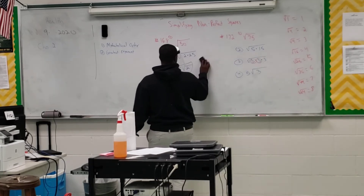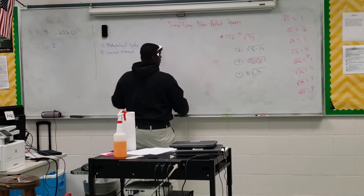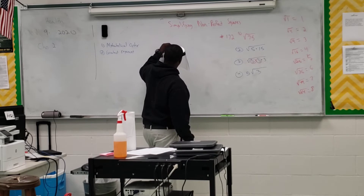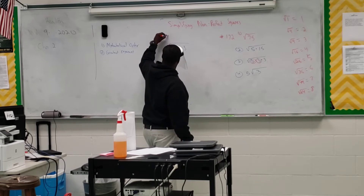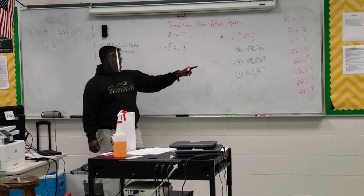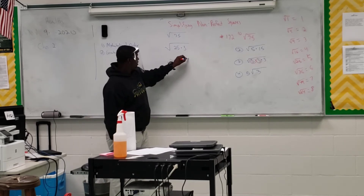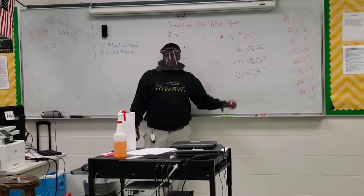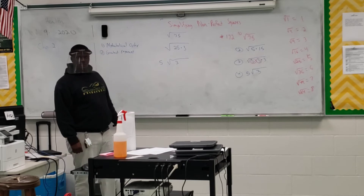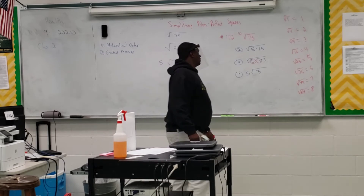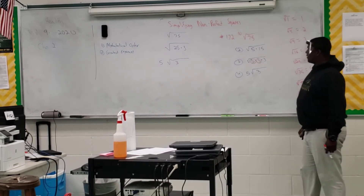Now if we had used the correct factor at first, we wouldn't need all those steps. The correct factor of 75 we could use — how many times does 25 go into 75? Three. So I know 75 has a factor of 25. Is 25 a perfect square? Yes. So I move five to the outside of the radical and leave three on the inside. Is that the same answer? Yes — either way it's the same, but using 25 saves you extra steps.